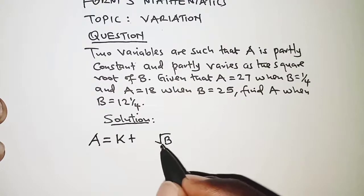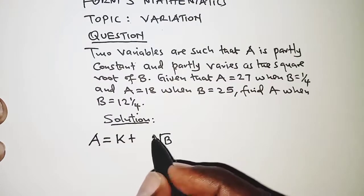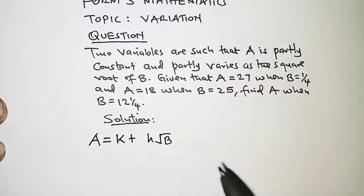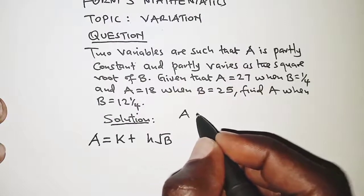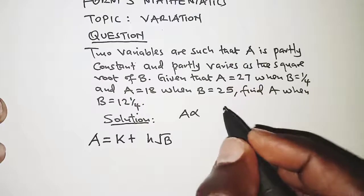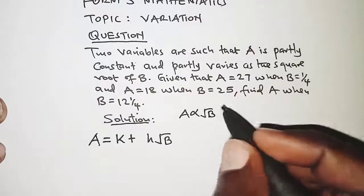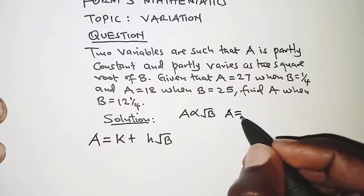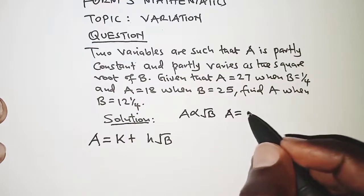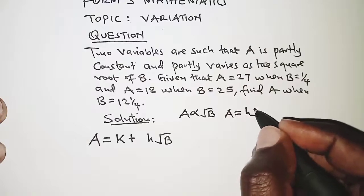we express it as a product of a given constant, say h. We are getting this from the fact that A varies as the square root of B, and usually when we introduce the equal sign, A becomes equal to root of B multiplied by a scalar, say h. So h root B.